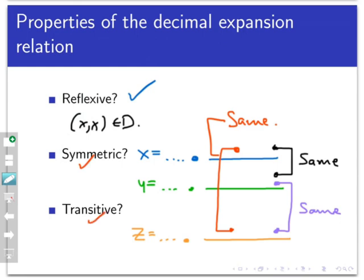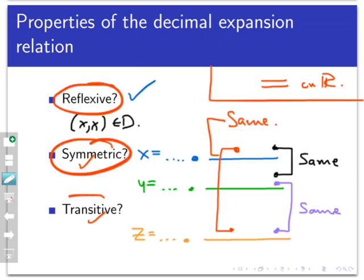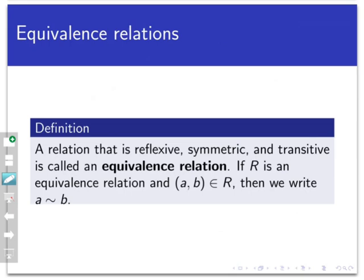Through concept checks, we've seen other relations that are reflexive, symmetric, and transitive — the most important being the relation of equality, saying two real numbers are related if and only if they are equal. Relations that satisfy all three properties of reflexivity, symmetry, and transitivity indicate a very high level of similarity or equivalence among the related items. We're going to formally call a relation that is reflexive, symmetric, and transitive an equivalence relation.